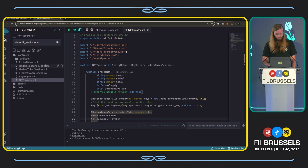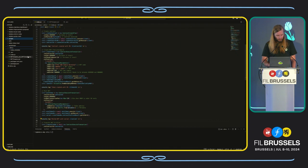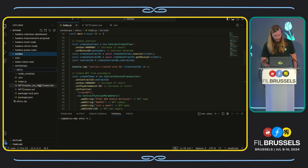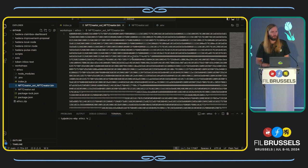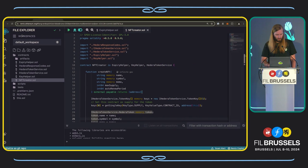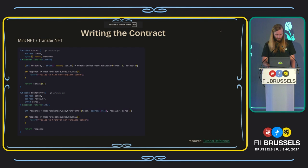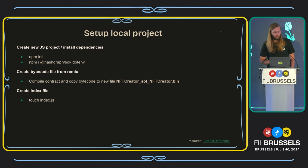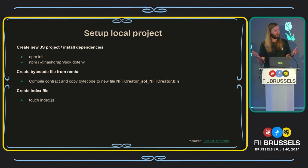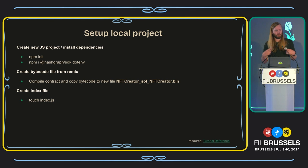I've already done that, so I'm not going to compile live, but you can see I've added the nftcreator.sol bin file — I have the bytecode already in my project in my IDE. The ability to use JavaScript really enables a massive amount of developers to access this. We're going to use JavaScript and the Hashgraph JavaScript SDK to deploy the smart contract and interact with it.